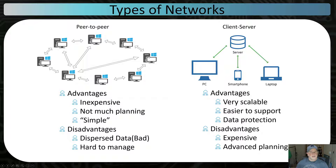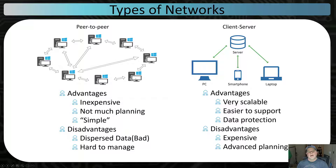Disadvantages of peer-to-peer: data is dispersed. The challenge is data might be on different machines and backing up each one is difficult — we prefer data in a central location. There's also management: if a user wants to access information on multiple computers, that user needs an account on each computer with permissions. So if a user needs access to eight computers, I have to create eight user accounts in a basic peer-to-peer network.